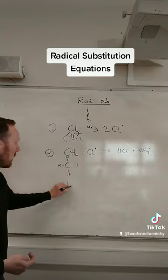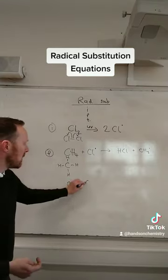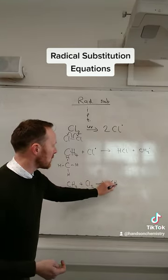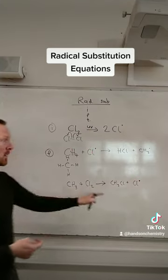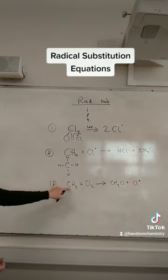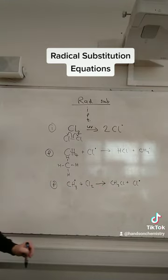So what else could I have? I could get a CH3 coming along and reacting with chlorine to make CH3Cl and a Cl radical. That is propagation - a radical and a molecule making a different molecule and a different radical.